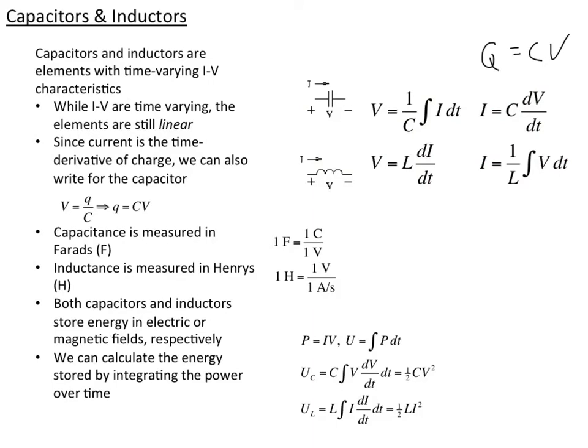We measure capacitance in Farads, and that's one coulomb per one volt — we get that from this definition. Inductance is measured in Henrys, and that's one volt per amp per second, which comes from this definition.